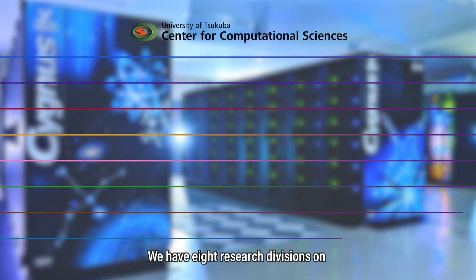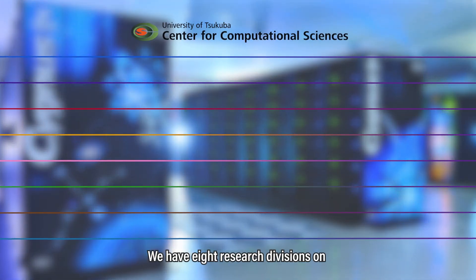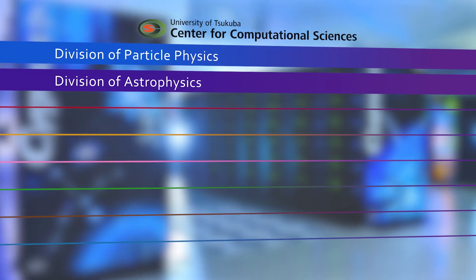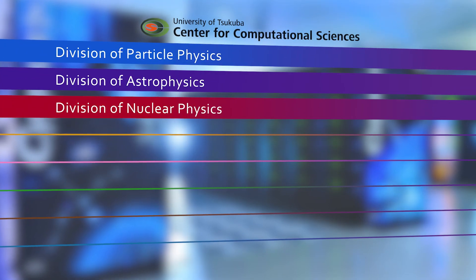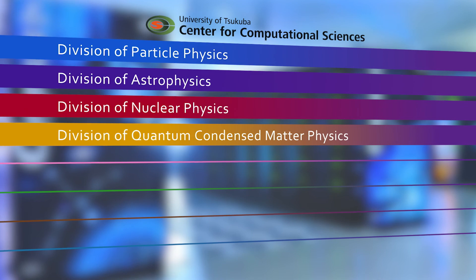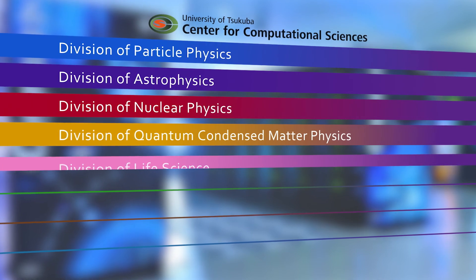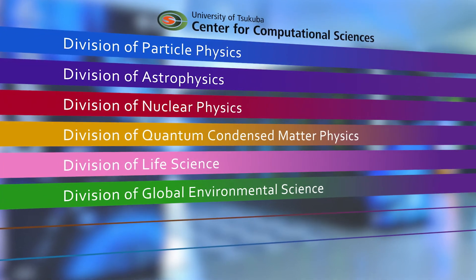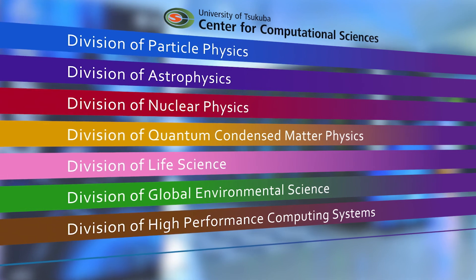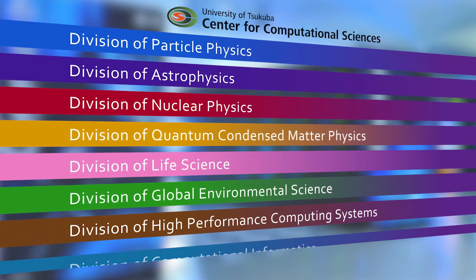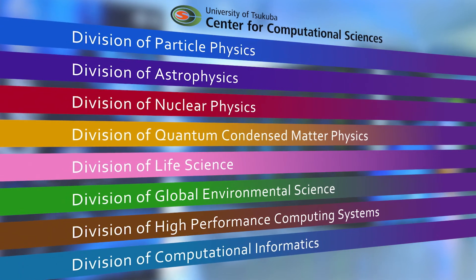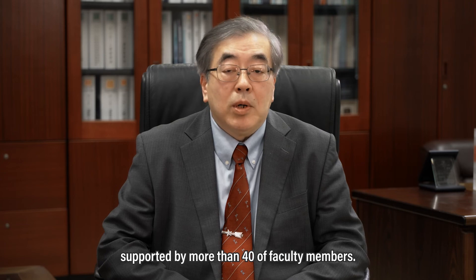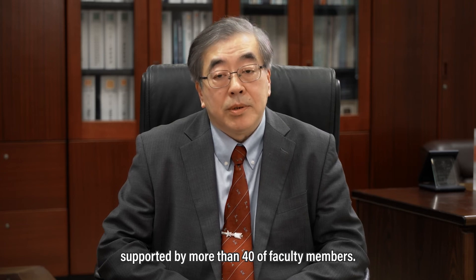We have eight research divisions on particle physics, astrophysics, nuclear physics, quantum condensed matter physics, life science, global environmental science, high performance computing systems, and computational informatics, supported by more than 40 faculty members.